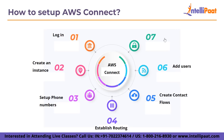The sixth step is to add users, where you can set up the agents' and managers' profiles and assign them a routing or security profile. In the final seventh step, you have the ability to customize your settings — after the initial setup is over, you can customize it according to your business needs.